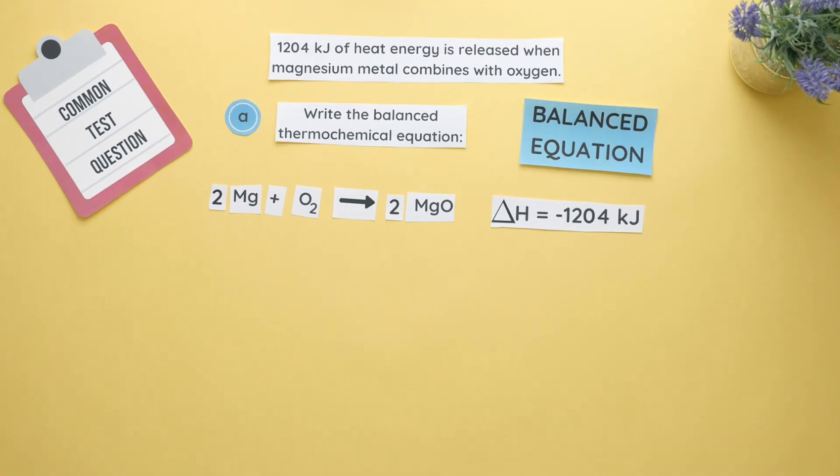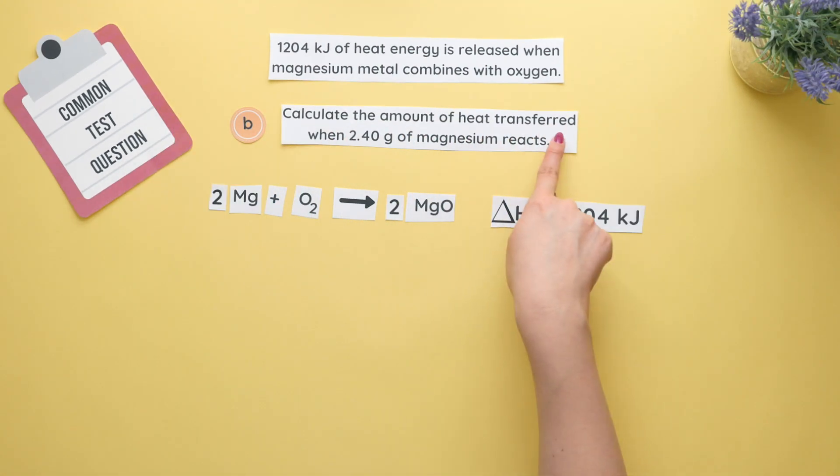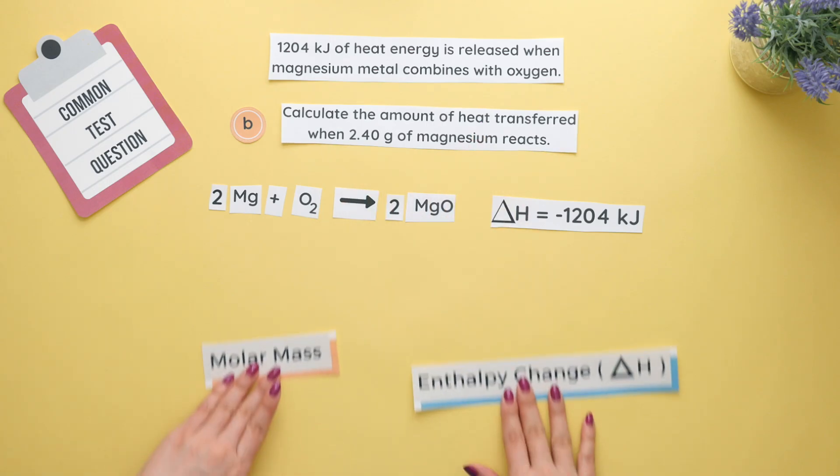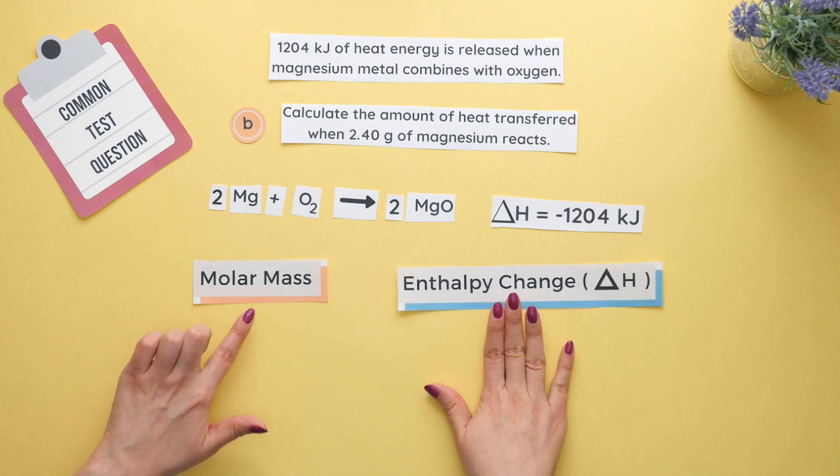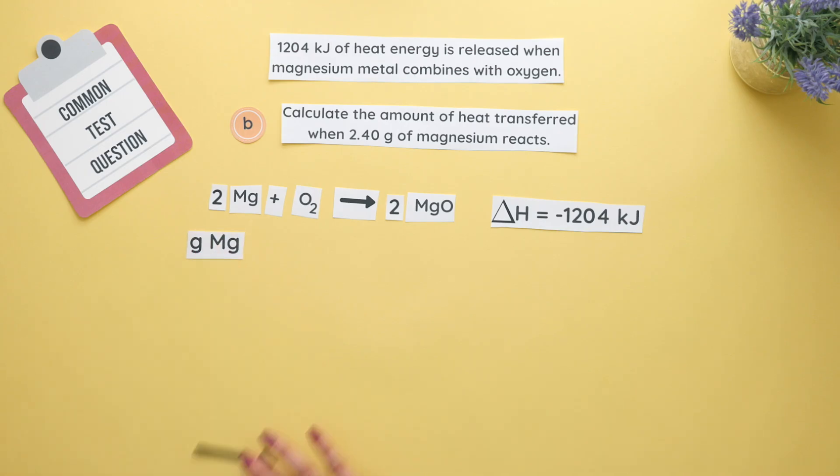We'll use everything we found in part A for part B which states calculate the amount of heat transferred when 2.40 grams of magnesium reacts. So we are given the mass of magnesium and we're finding heat. We'll use the main conversion factors we discussed at the beginning of this video which were molar mass and enthalpy change. To get from grams to kilojoules which is what heat is measured in we will go from the grams of magnesium to the moles of magnesium to kilojoules.